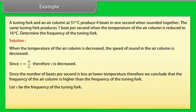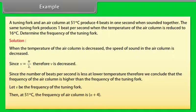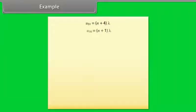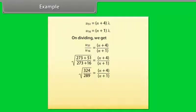Let N be the frequency of the tuning fork. Then at 51°C, the frequency of the air column is N + 4. At 16°C, the frequency of the air column is N + 1. On calculating the given values, we get the frequency of the tuning fork is equal to 50 Hz.